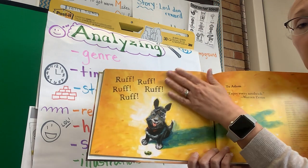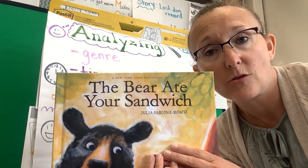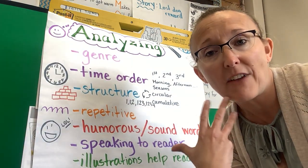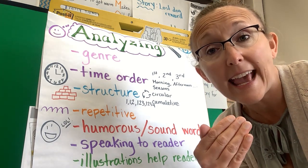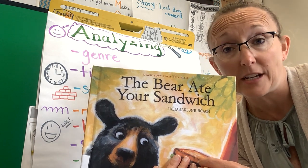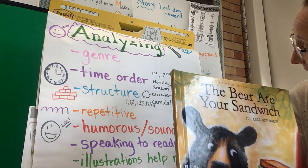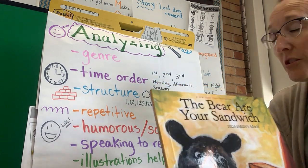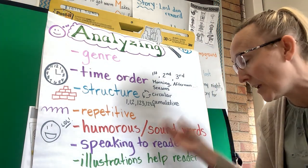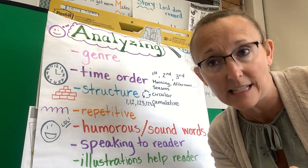'Ruff ruff ruff ruff ruff ruff!' There are those sound words again. I also kind of think maybe none of this actually happened — perhaps the dog made up the entire story to get away with eating the sandwich, which would be another humorous thing. Those are some ways I analyzed the story. I could also talk about the genre — not realistic fiction because the dog is talking, so it would just be fiction. It kind of goes in time order. Not really a circular story unless you count that he ended up back in the forest. We talked about sound words, speaking to the reader, illustrations helping us, and genre — four different ways to analyze this text.